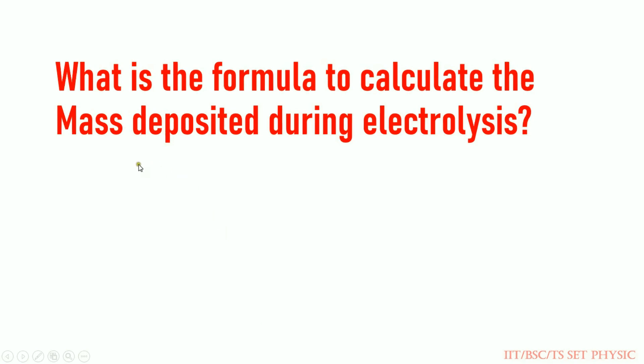What is the formula for mass deposited during electrolysis? The formula is M = Z × Q, where Z is the electrochemical equivalent and Q is the charge.